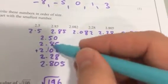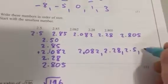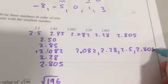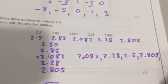And then I've got two with 2.8. So I move to the hundredths column, and that's 2.805, and then 2.85.